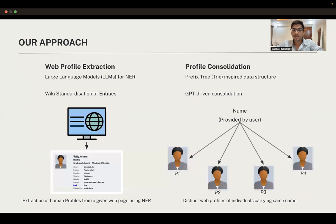Our method uses LLMs, or large language models, for NER and employs wiki standardization for profile extraction. We use a prefix tree-inspired data structure to efficiently consolidate profiles. These innovative approaches overcome the challenges mentioned earlier. Our nine-step process powered by LLMs efficiently extracts and combines different web profiles, bringing order to chaos.